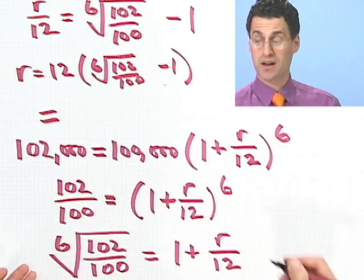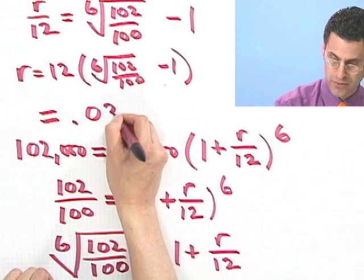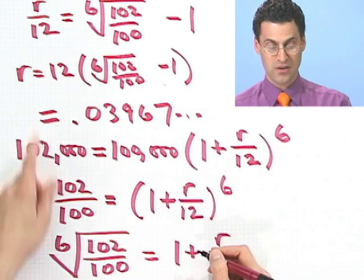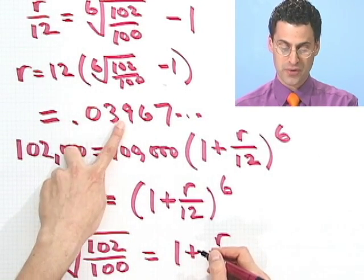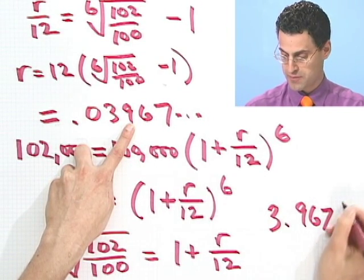And now we can just compute that on a scientific calculator. And if you do that, you see 0.03967 stuff. So the rate is 0.03967, which is 3.967% or so.